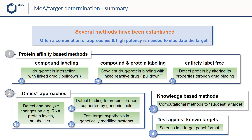Over the past years, a multitude of methods to elucidate a molecular target have been established. In most cases, a combination of approaches as well as high potency for the tool or lead compounds is needed to elucidate the target. The following slides are clustered around the following topics: protein affinity-based methods, where compounds with or without forms of labeling interact with protein targets; followed by omics approaches where we look into genomic tools; and lastly, additional important computational and knowledge-based strategies will be highlighted.